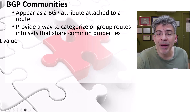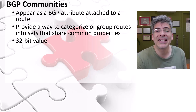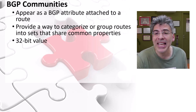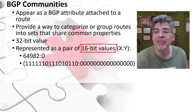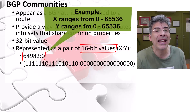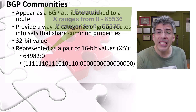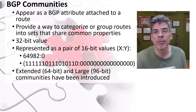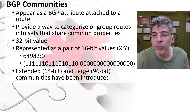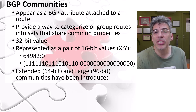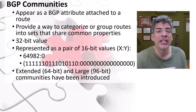A community is defined by a 32-bit value that is added as an attribute to a particular route. Traditionally, BGP communities were represented as a pair of 16-bit values, often written in the format x:y where x and y are integers. More recently, extended communities, which are 64-bit values, and large communities, which use a 96-bit format, have been introduced for more flexibility, which are useful for extensively large networks.